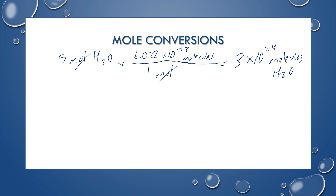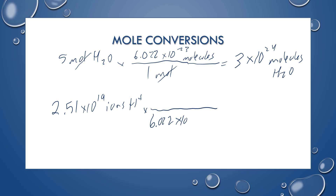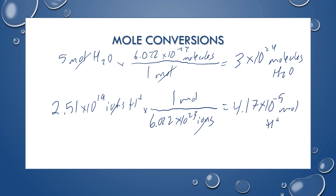You can also go the other way if you have particles. Let's say I have 2.51 times 10 to the 19th ions of H+. I know that there are 6.022 times 10 to the 23rd ions for every one mole. You divide by Avogadro's number and get 4.17 times 10 to the negative 5th moles of hydrogen ions.